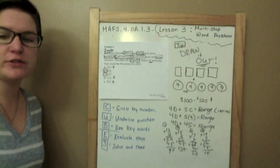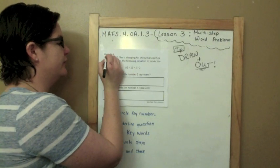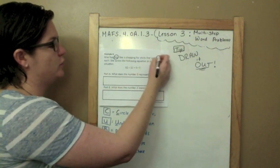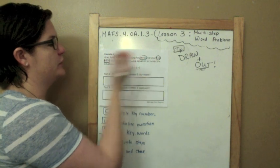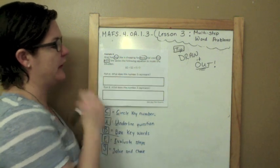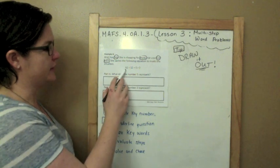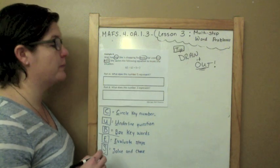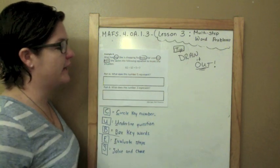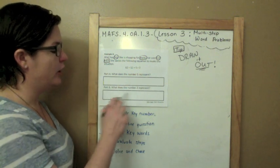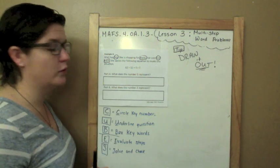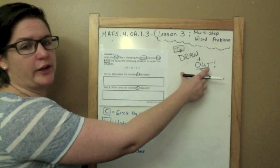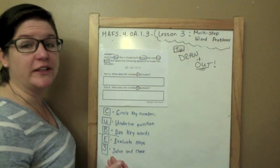Ariel has $62. She is shopping for shirts that cost $12 each. She writes the following equation to model the situation: $62 total divided by the cost of the shirt equals 5 remainder 2. What does the 5 represent? In part B, what does the number 2 represent? I don't think we necessarily need to draw this one out.